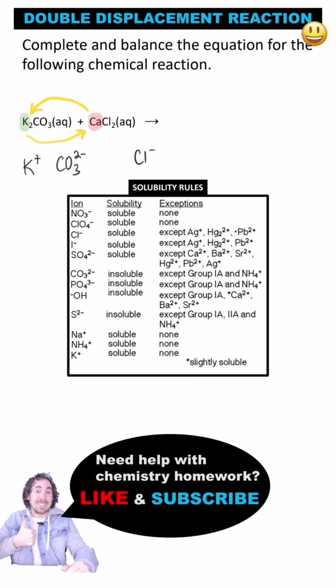Chloride has a negative one charge and that's why two are needed here because calcium has a two positive charge. So we just need one potassium and one chloride and then one calcium and one carbonate and then we'll balance the equation by adding these coefficients.